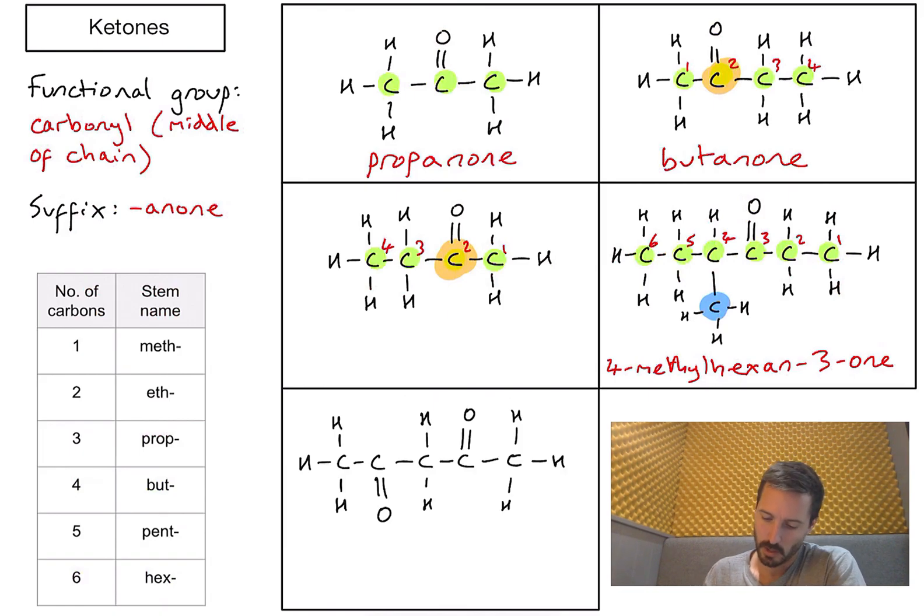Final example then. Oh, here we go. This is interesting. Why is it interesting? Well, I've actually got a carbonyl functional group there and one there. So I've got two of them in my molecule. How am I going to name this then? Well, let's look at the number of carbons first. I've got one, two, three, four, five. Five relates to the stem name pent. So in this case, I'm going to put pent.